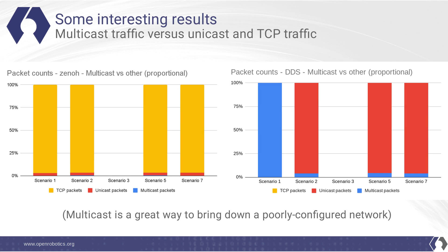Looking at multicast traffic versus unicast traffic — multicast has been a particular pain point for us, as DDS discovery is built on it. In Zenoh, the multicast traffic only extends to discovering where other nodes are, and then it switches to unicast for the rest of the discovery process. As a result, the multicast packet count is so low that it's barely visible in the graph. The remainder is unicast packets to finish off discovery, then switching to TCP for data transfer. In DDS, by contrast, the multicast is very visible because all the discovery traffic goes over multicast prior to the final transfer of discovery data.